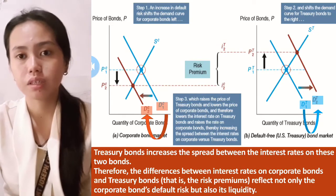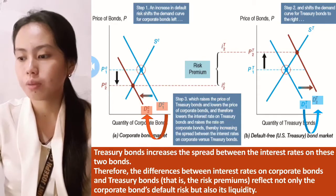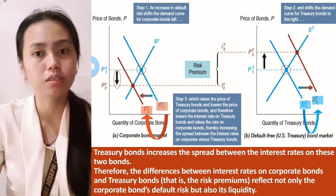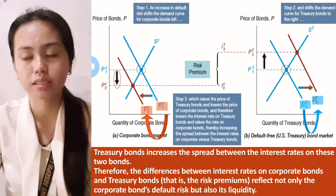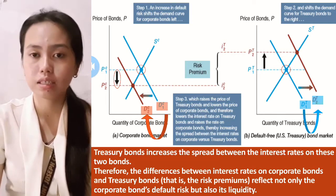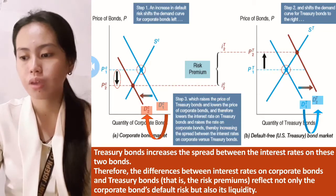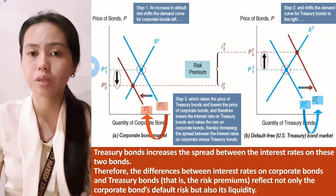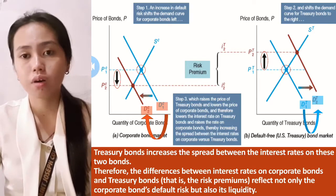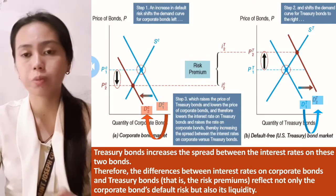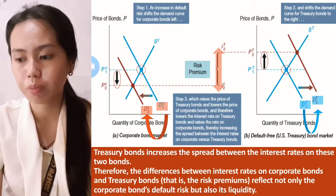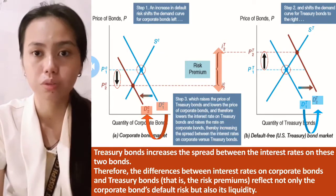The shifts in the curves show that the price for the less liquid corporate bond falls while its interest rate rises. Meanwhile, the price for the more liquid Treasury bond rises and its interest rate falls — an inverse relationship between the two. This is the result of the rise of the spread of the interest rates between the two bonds, or the risk premium, as discussed in the default risk.